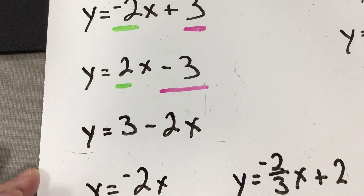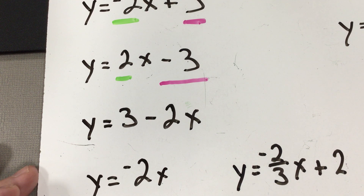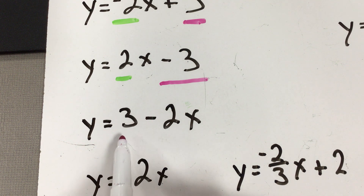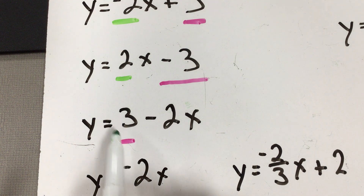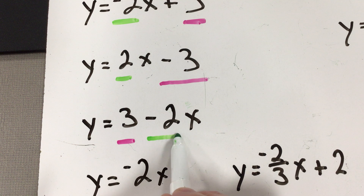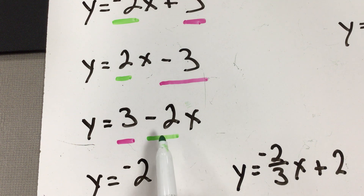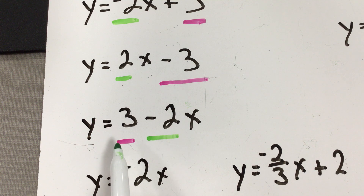This next example might look a little confusing because it's written in a different format. This is still slope-intercept form — all they did was move the slope to the far side. The part not attached to x is still your y-intercept, which is positive 3. The slope is negative 2. Just because the slope term comes first doesn't change what it is, and remember it's negative 2, not negative 2x.